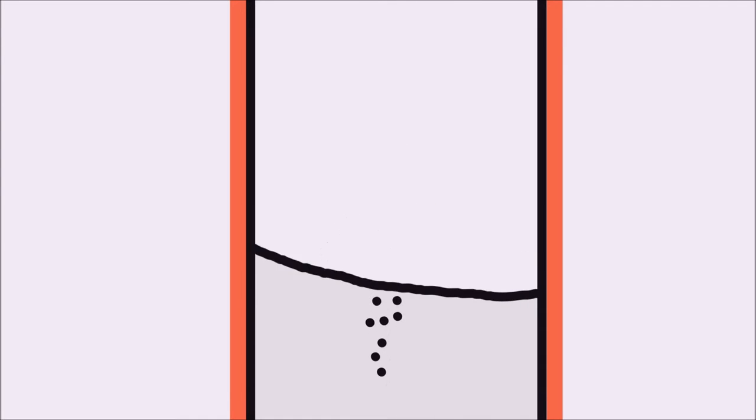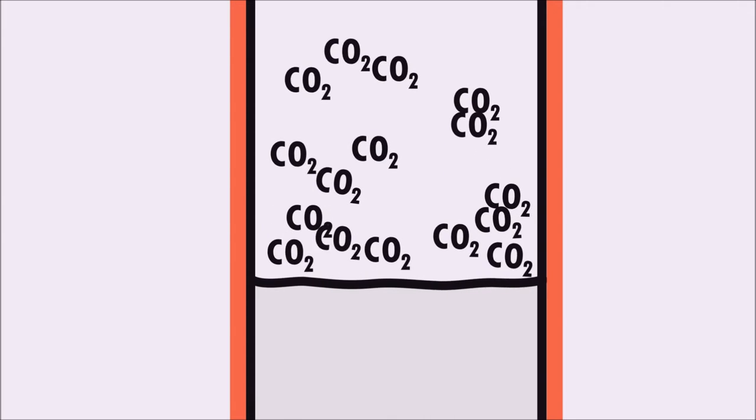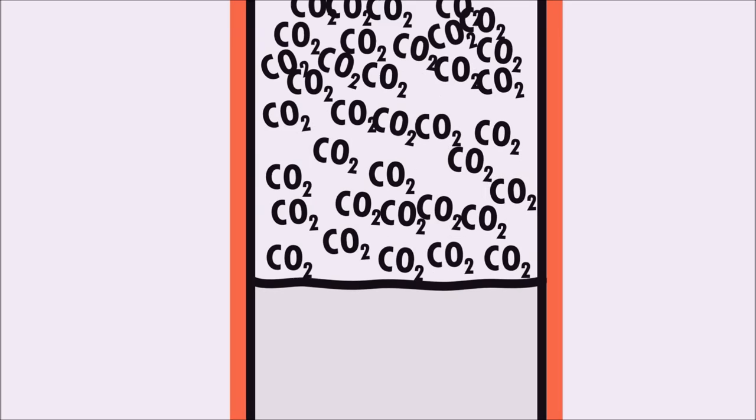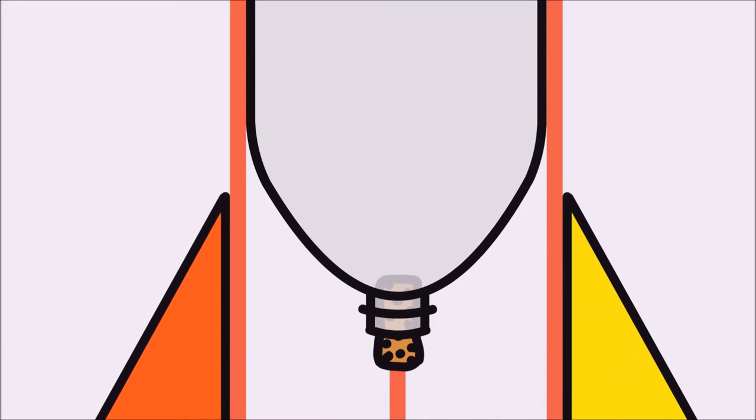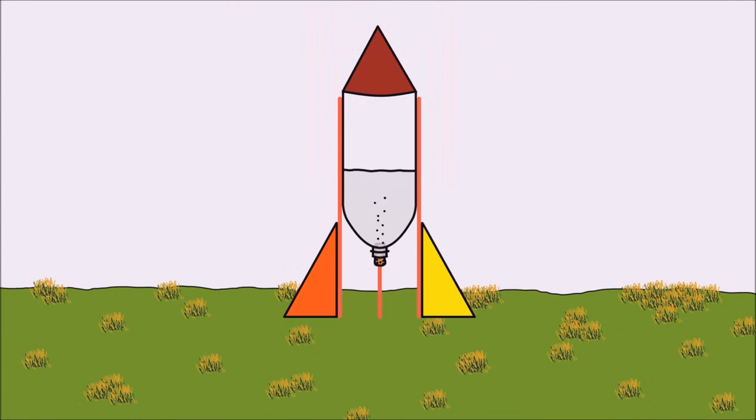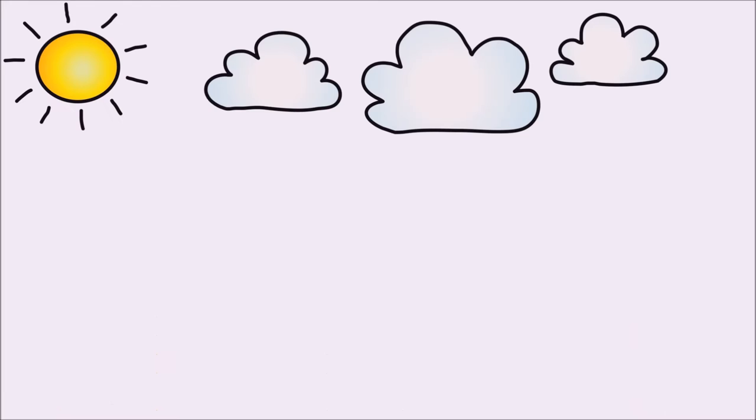When the baking soda reacts with the vinegar, the carbon dioxide molecules become free from its other chemical bonds. The carbon dioxide gas builds up inside the bottle until the pressure pushes the cork out, releasing the vinegar solution. And this is how the rocket flies!